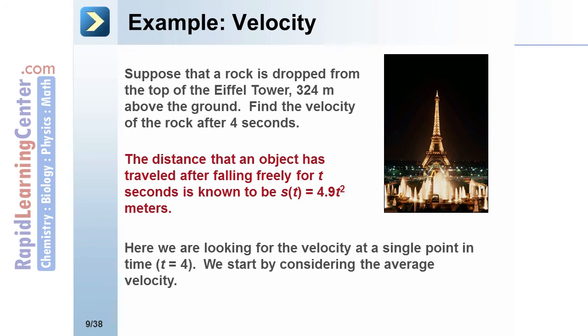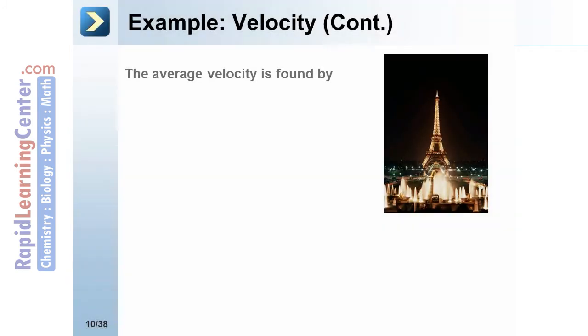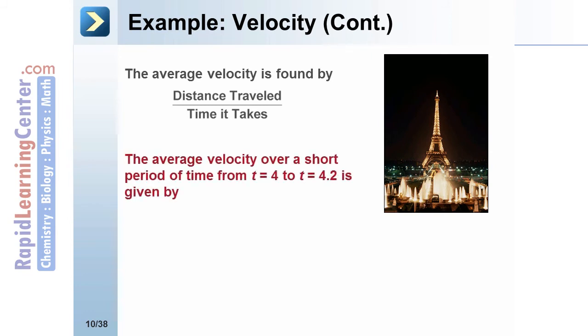We're going to start by considering the average velocity. The average velocity is found by taking the total distance traveled divided by the time it takes to travel that distance. The average velocity over a short period of time, let's say from t = 4 seconds to t = 4.2 seconds, is given by the formula: s evaluated at 4.2 minus s evaluated at 4, divided by 0.2 seconds.